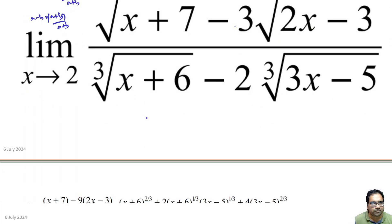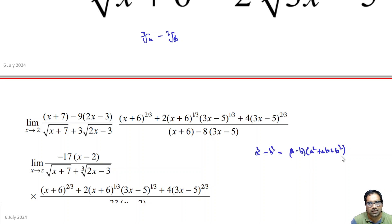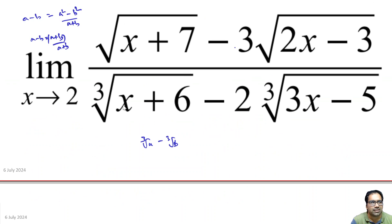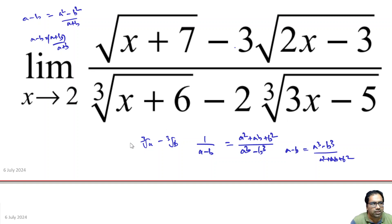The denominator is in the form cube-root(a) minus cube-root(b). We know the identity a³-b³ = (a-b)(a²+ab+b²). So if we treat this as a minus b, we can write a minus b as (a³-b³)/(a²+ab+b²). We are multiplying the denominator expression with its conjugate.